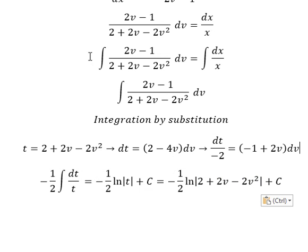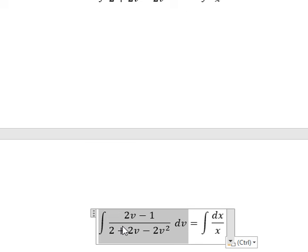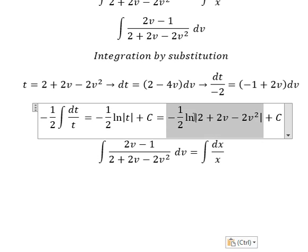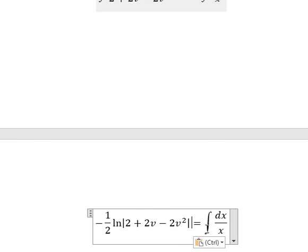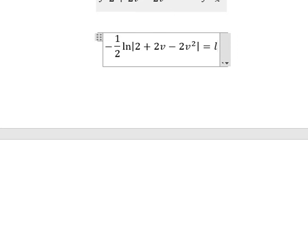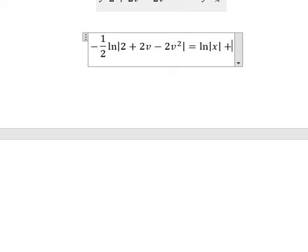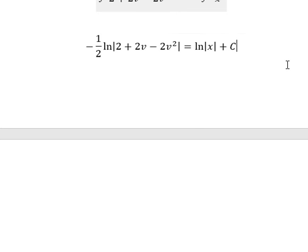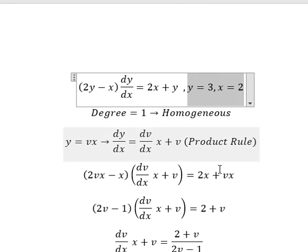Now we go back and substitute. The integration of the right side gives ln of the absolute value of x, and we add c. Back-substituting t gives ln of the absolute value of 2 plus 2v minus 2v squared.